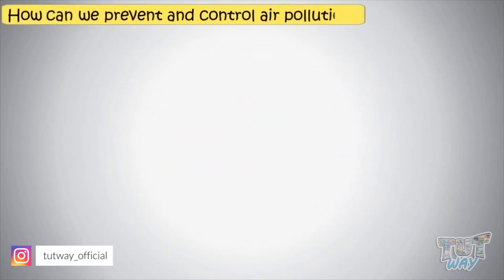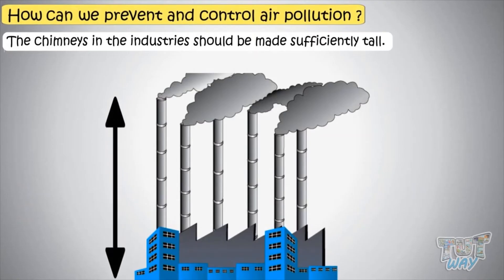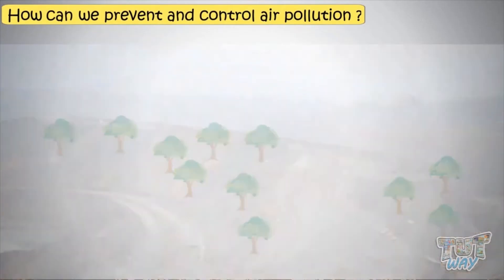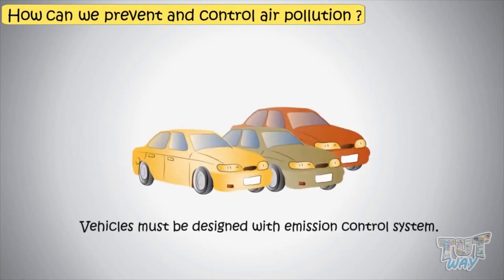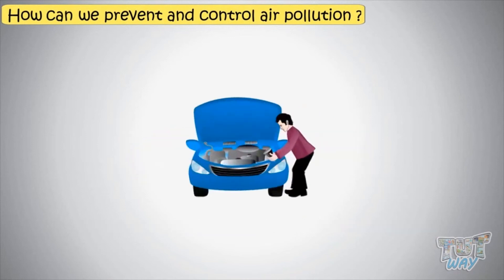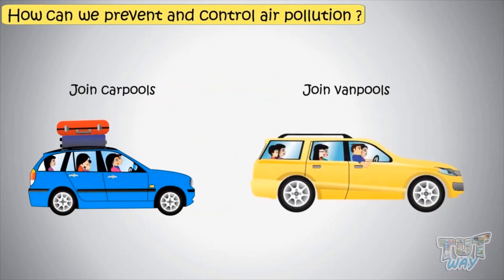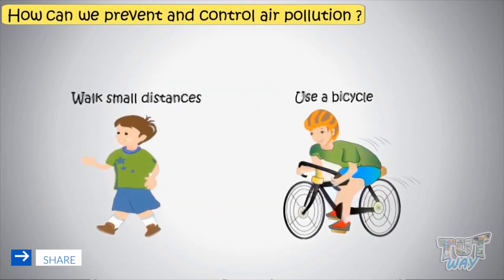Now let's learn how we can control air pollution. There should be sufficient distance between industrial and residential areas. The chimneys in industries should be made sufficiently tall so that smoke is released as high as possible. The mining areas should be planted with trees. Coal fuel should be used as little as possible. Vehicles must be designed with an emission control system and must get regular maintenance checks. We must try to join carpools or vanpools to save fossil fuels, and always try to prefer public transport.